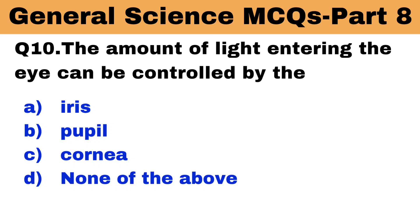Question number 10. The amount of light entering the eye can be controlled by what? The right answer is option B: pupil.